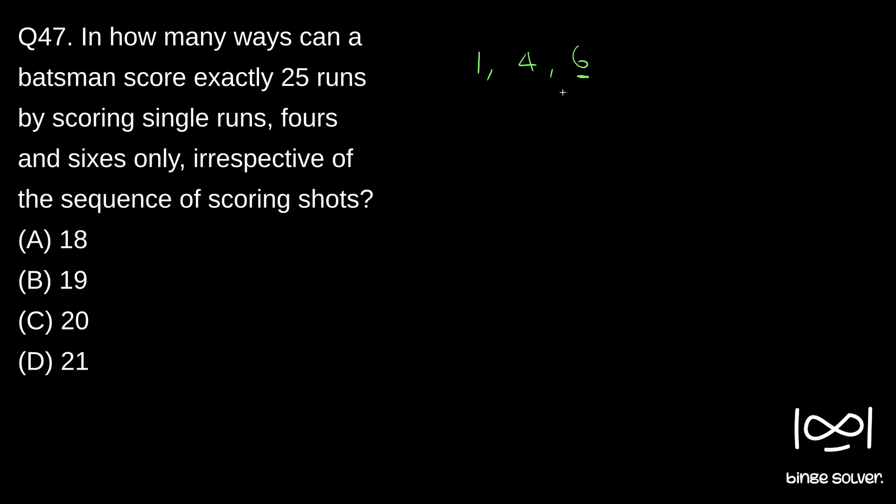We will think from the 6 perspective. So number of times he can score 6 will be at the maximum 4 times. So let's say 4 sixes. 4×6 will be 24. He already scored 24 runs. So 4 sixes means 24 runs. The number of ways he can score the remaining one will be one way. So there is only one way.